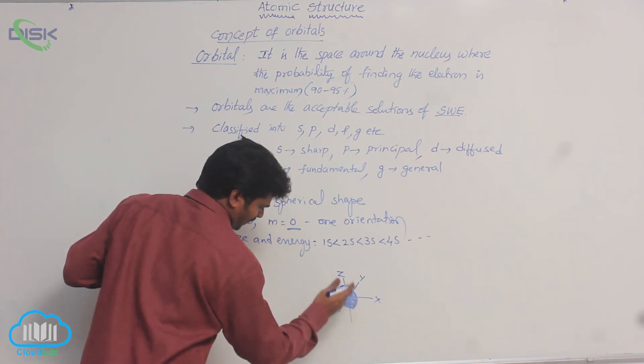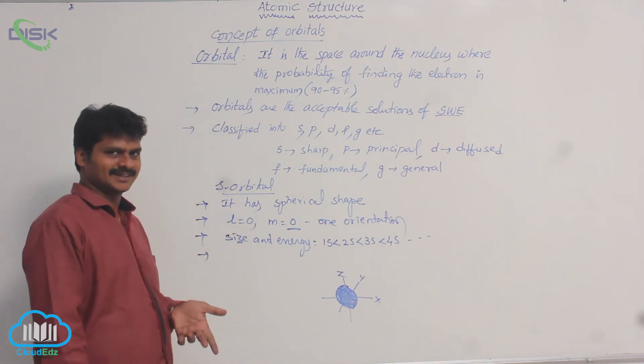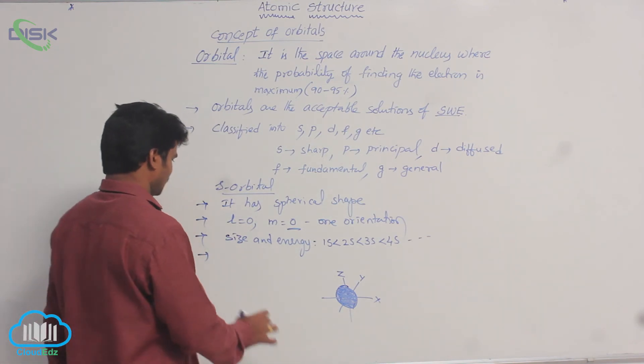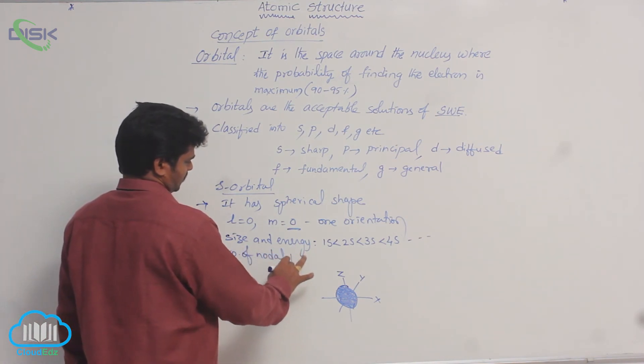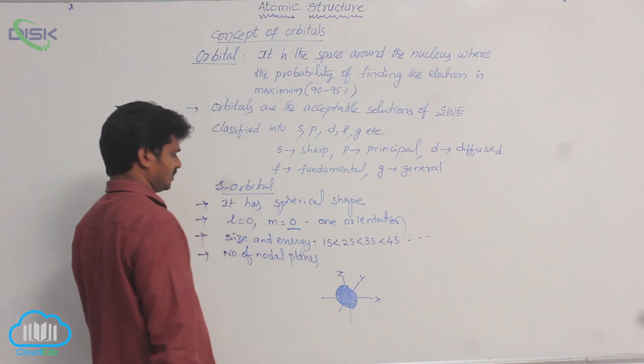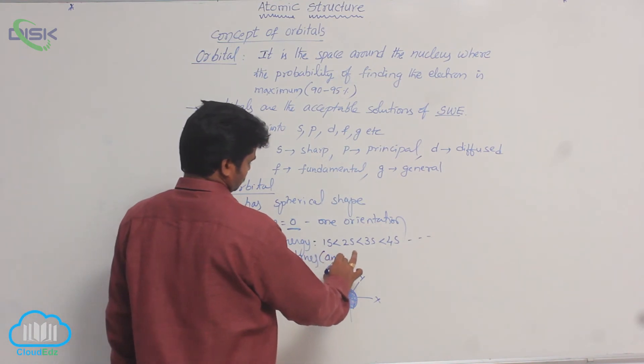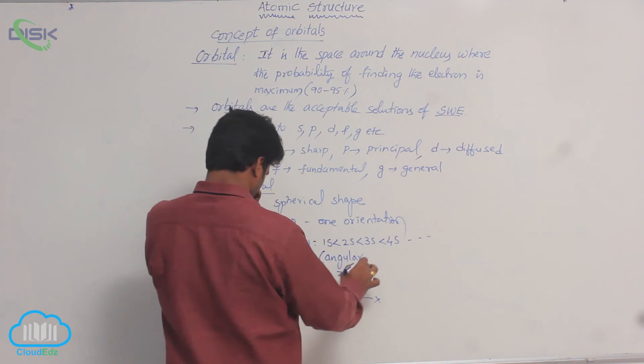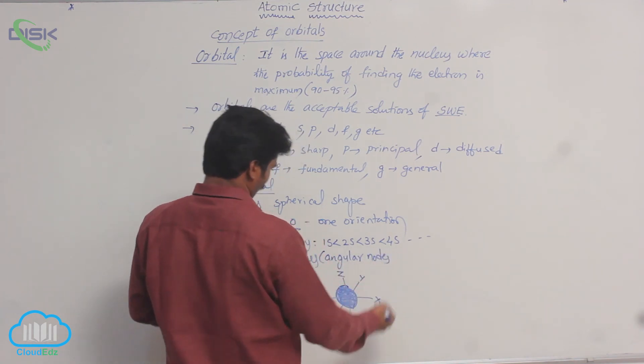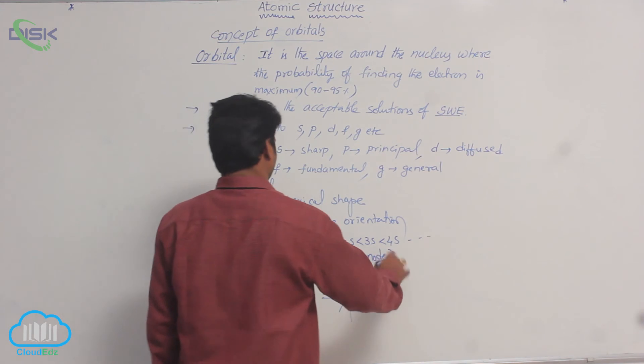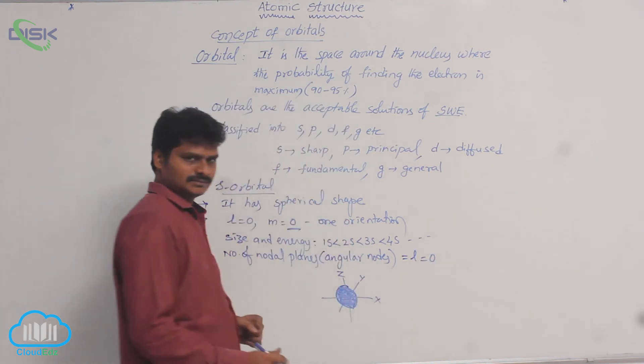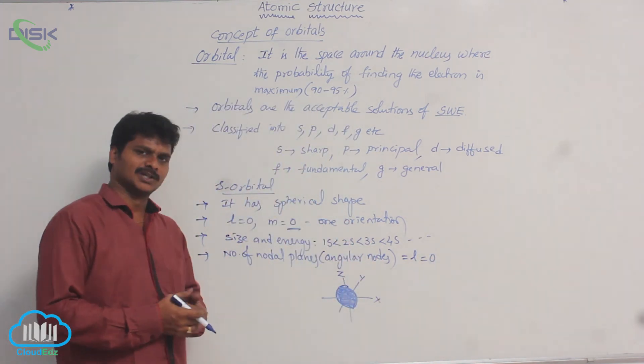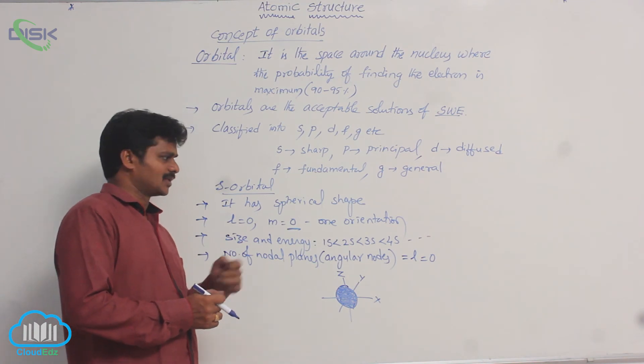Can you pass a plane through this sphere without cutting it? We can't. That's why, number of nodal planes, also called angular nodes. Number of nodal planes or angular nodes for S orbitals is equal to L, formula L equals 0.